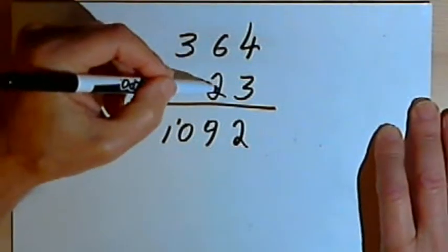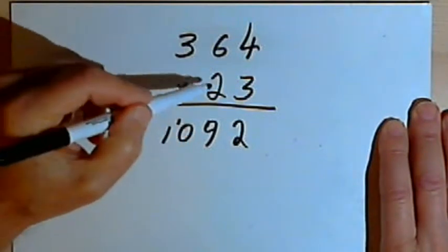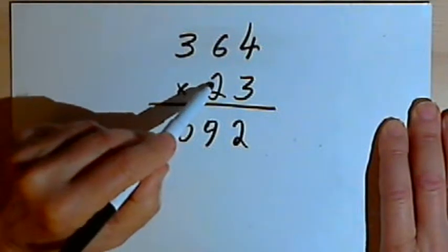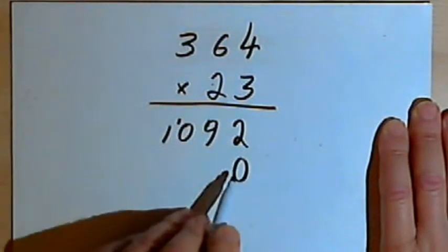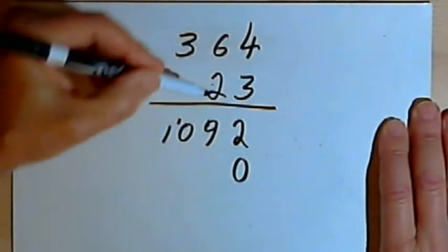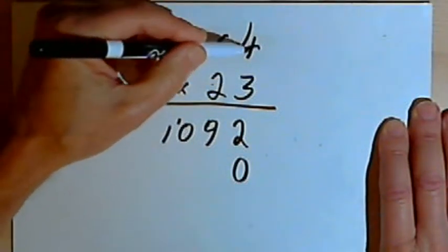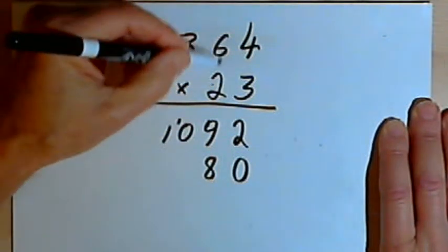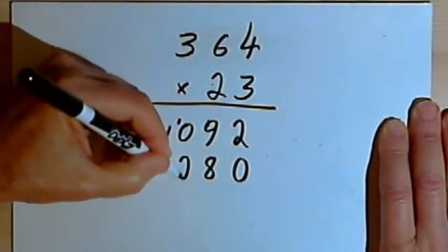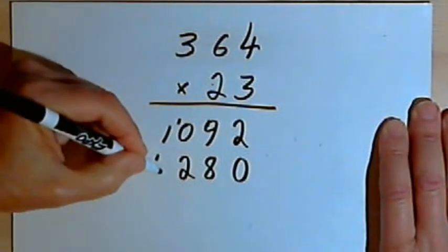Now I'm going to go on to the 2, the tens part of the number 23. Since I'm multiplying by a number in the tens column, I'm going to add a zero here first in the units column to shift all my answers over. Now I'll multiply 2 times 364. 2 times 4 is 8, 2 times 6 is 12, I'll write 2 and carry a 1, 2 times 3 is 6, plus one more is 7.